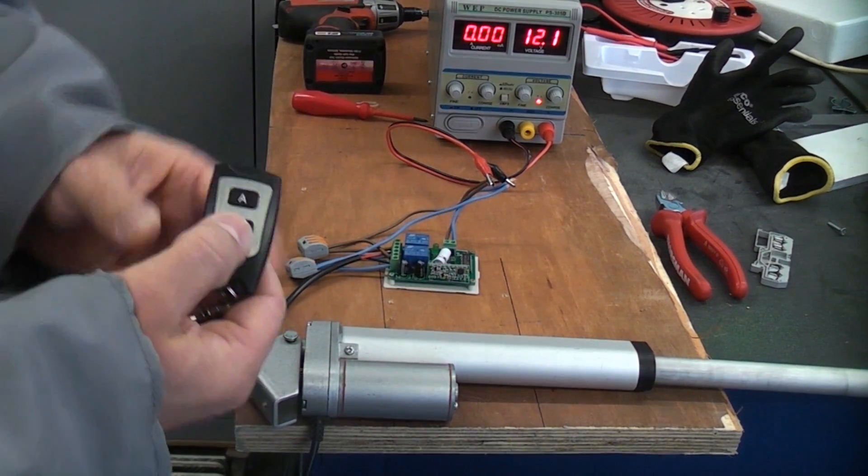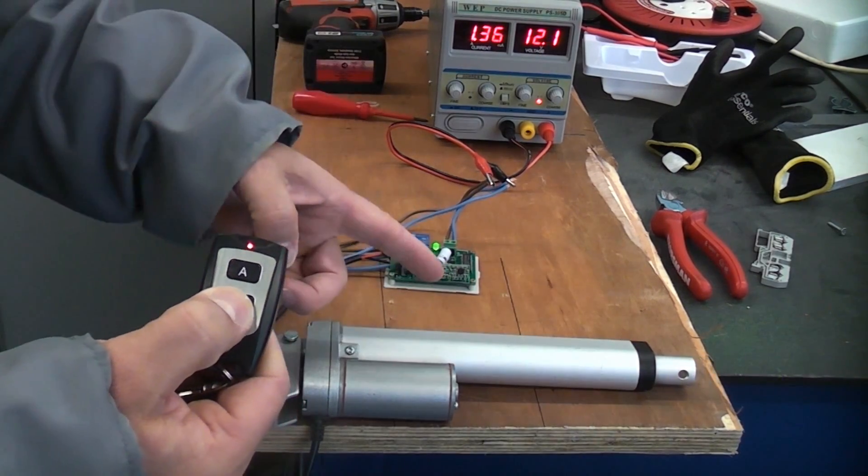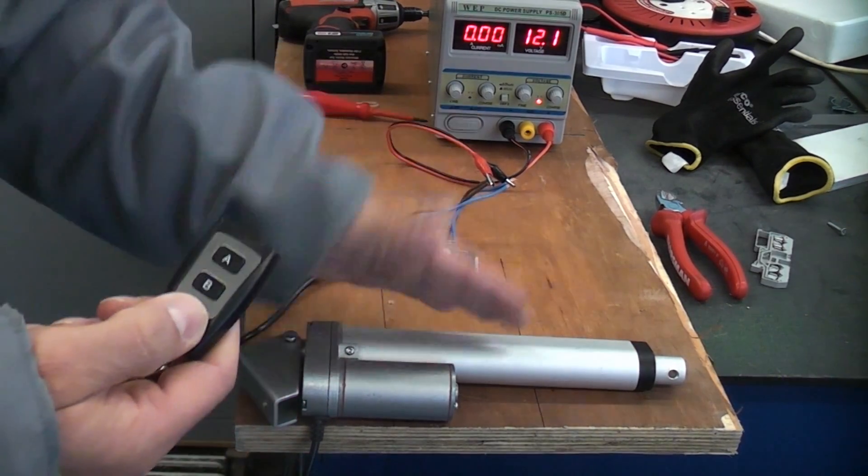Then if you press B it will then retract. The LEDs come on on the circuit board. Now it's at the limit switch that has knocked it off.